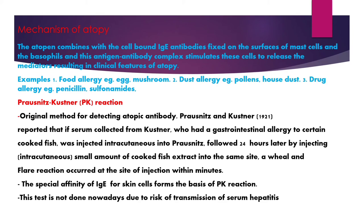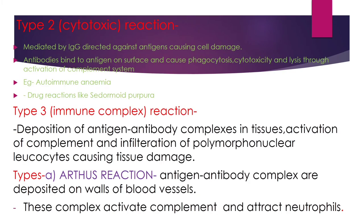Type 2 is the cytotoxic reaction. In this reaction, it is mediated by IgG directed against antigens causing cell damage. Antibodies bind to antigen on the cell surface, then phagocytosis occurs along with cytotoxicity and lysis through activation of the complement system. Examples of cytotoxic reactions include autoimmune anemia and drug reactions like thrombocytopenic purpura.